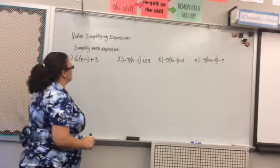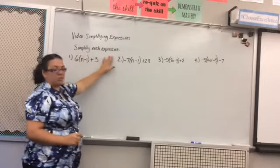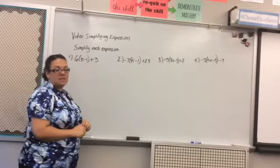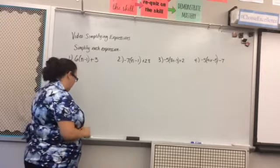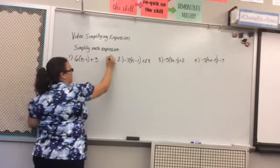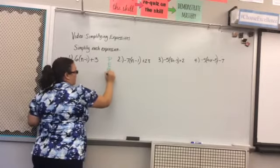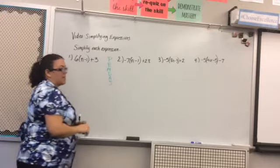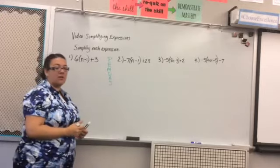So first thing we're going to do is read our directions. It says simplify each expression. So we're going to take this expression and I'm going to try to simplify it as much as I can. So I want to think about the order of operations which we remember is PEMDAS. When I'm simplifying an expression I need to think about any of these operations that can happen to kind of condense it down a little bit.